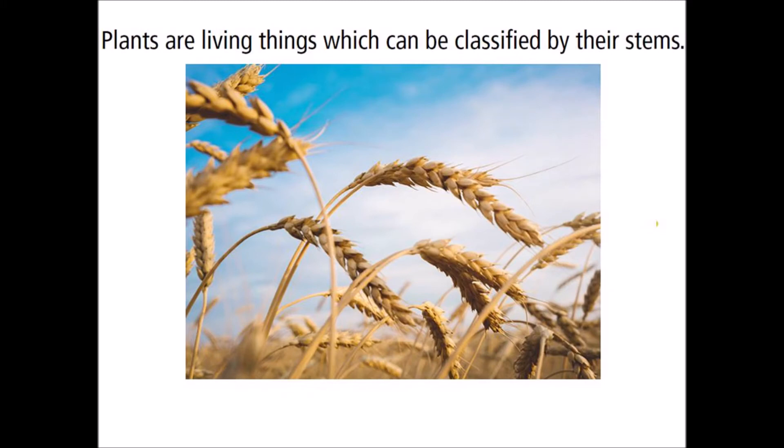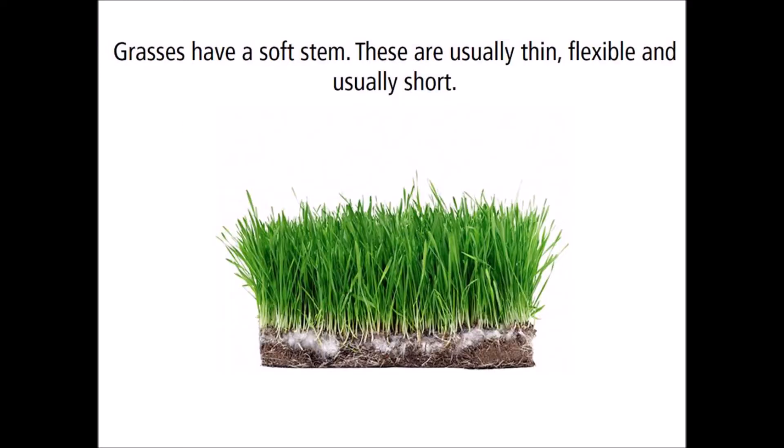Plants are living things which can be classified by their stems. Grasses have a soft stem. These are thin, flexible and usually short.